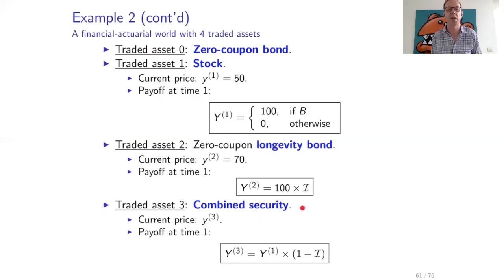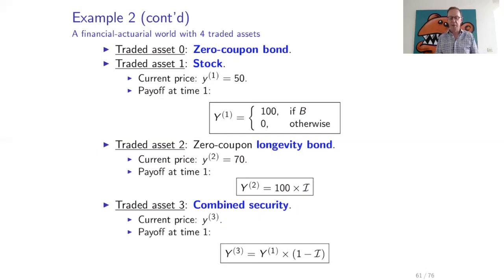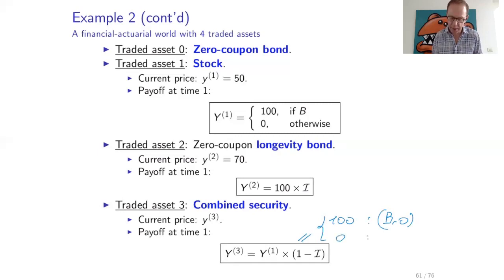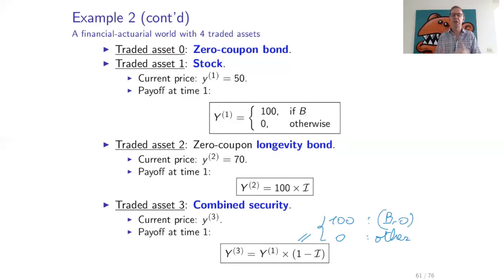This longevity bond has a payment at time one positively correlated with the number of survivors in the population. There is also a combined security with current price y3, and the payoff at time one is y1 multiplied by (1 minus i) — the value of the stock multiplied by one minus the value of the index. This equals 100 if the market is booming and few people survive, and zero in any other case. This is also a theoretical security unlikely to be traded in a real financial market.